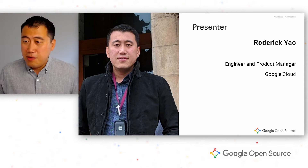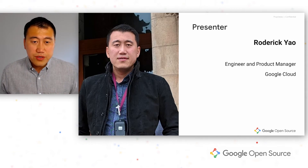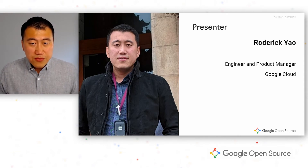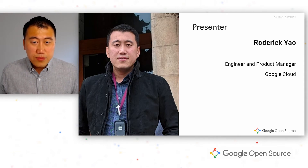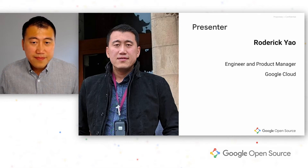A little bit more about myself. My name is Ravi Yao. I'm an engineer and product manager here at Google Cloud. I've been here at Google a little over four years. Before that, I've been working in a series of big data companies throughout my career.